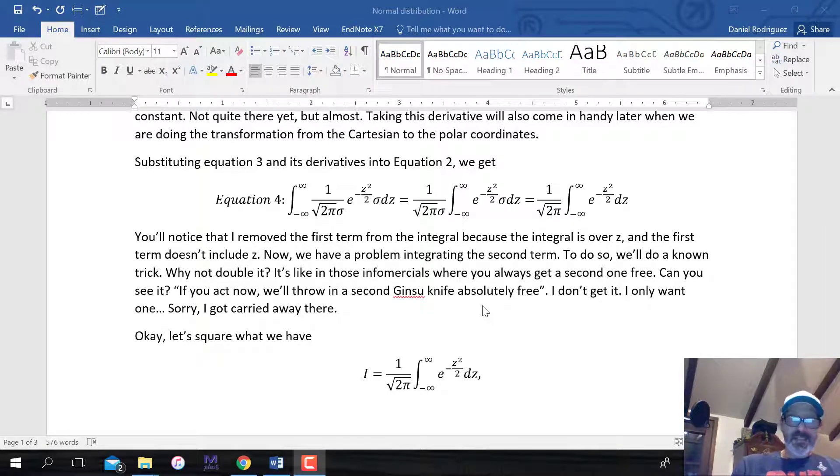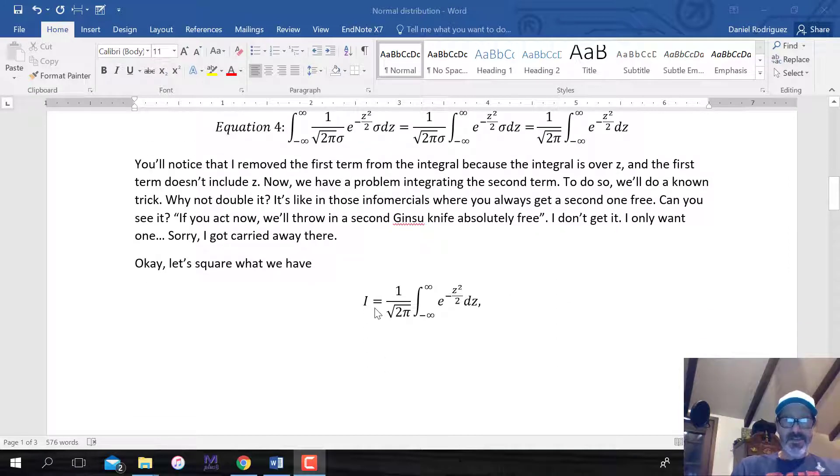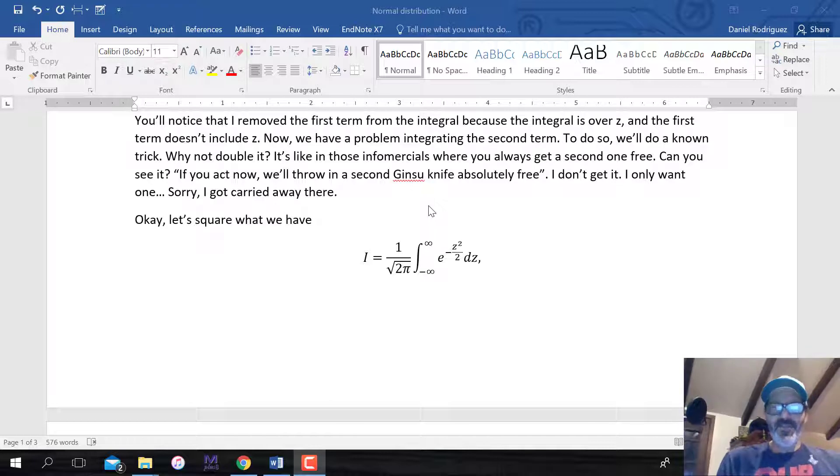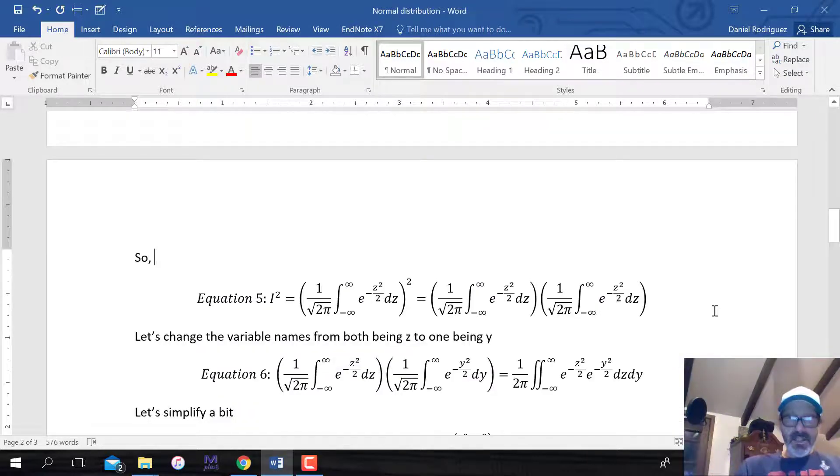So we're left with this beautiful function here, one over square root of 2 pi, and the integral for e to the minus z squared over 2 dz. Now, the solution of this integral is complicated, and you can't just use substitutions. So what some clever person did many moons ago was decide, hey, let's just square this puppy. Instead of this being I, let's just square it. I relate that to these old commercials about the Ginsu knives and all these infomercials. They always give you two of everything.